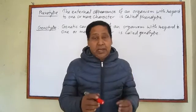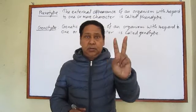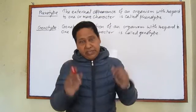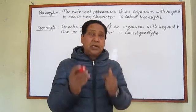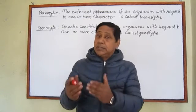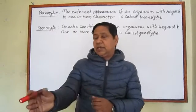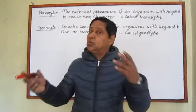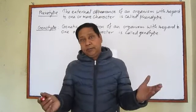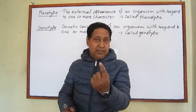Two important terms related to Mendel's experiment: phenotype and genotype. What is phenotype? The external appearance is called phenotype. The external appearance of a pea plant — if it is tall then we can say it is phenotypically tall, and if it is dwarf then we can say that this plant is phenotypically dwarf.